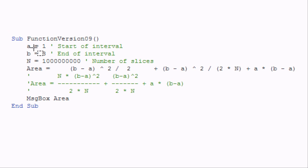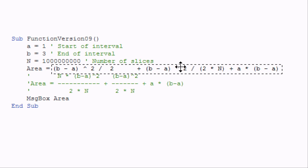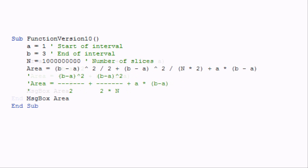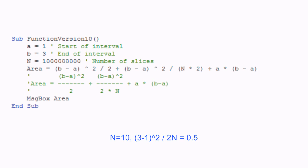That leaves us with just one N left. That N is on the bottom of a fraction. So as N gets larger, that fraction gets smaller. In fact, as N approaches infinity, that part of the formula approaches 0.